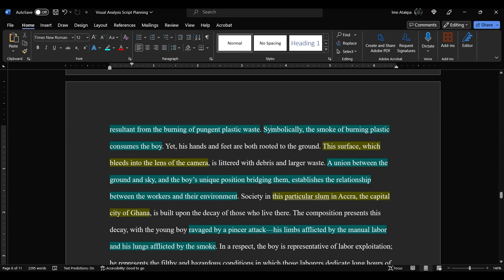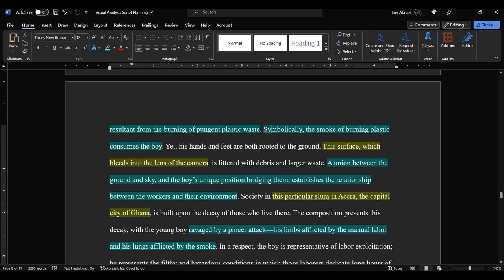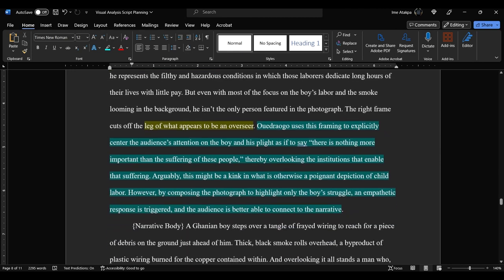The surface, which bleeds into the lens of the camera. And by that, I mean that the ground as it's photographed is littered with debris and larger waste, a union between the ground and sky and the boy's unique position bridging them establishes the relationship between the workers and the environment. This probably sounds a little bit pretentious. Like, I'm really flexing creatively in order to make this make sense.